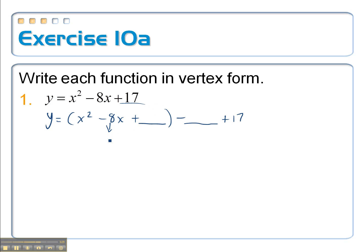So when I complete the square, take half of that. That's negative 4. Square that, it's 16. So since I added 16 on the inside, I'm going to subtract 16 on the outside to keep it balanced. Rewrite this as y equals x minus 4 quantity squared. And then whenever I take 17 minus 16, it's plus 1. So here's my equation in vertex form. And my vertex is 4, 1.